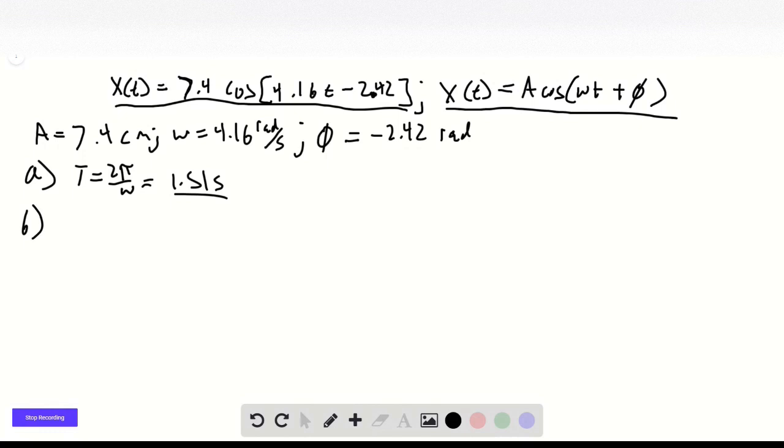The spring constant k equals m omega squared. This comes from the fact that omega equals root k over m, which equals 26 newtons per meter.